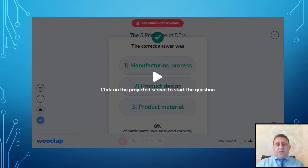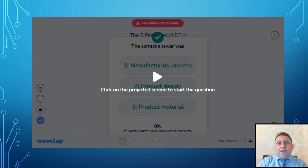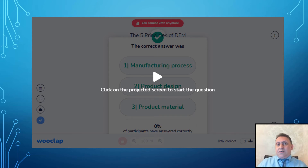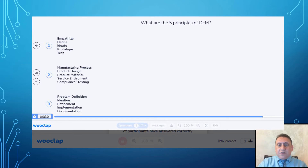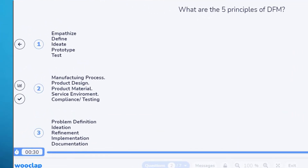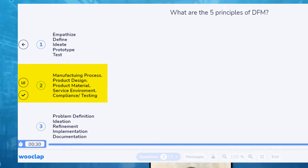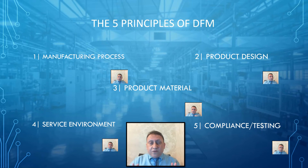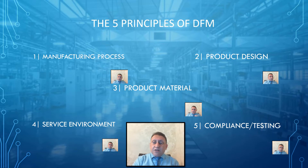What are the five principles of design for manufacturing? We have five elements that will help us achieve our target of making manufacturing easy at the design stage. The five principles are: manufacturing process, product design, product material, service environment, and compliance and testing.